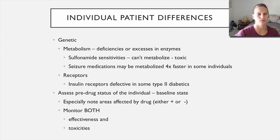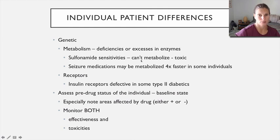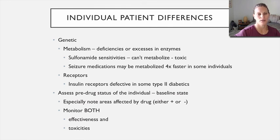We don't know a lot about genetic effects on drug response yet. Some examples we do know: sulfa drug sensitivities are often due to an inability to metabolize the drug — likely a genetic polymorphism. Type 2 diabetics have defective insulin receptors, and we still don't fully understand why. Whenever possible, establishing a pre-drug baseline status of the patient before starting therapy helps identify when these kinds of changes are occurring.